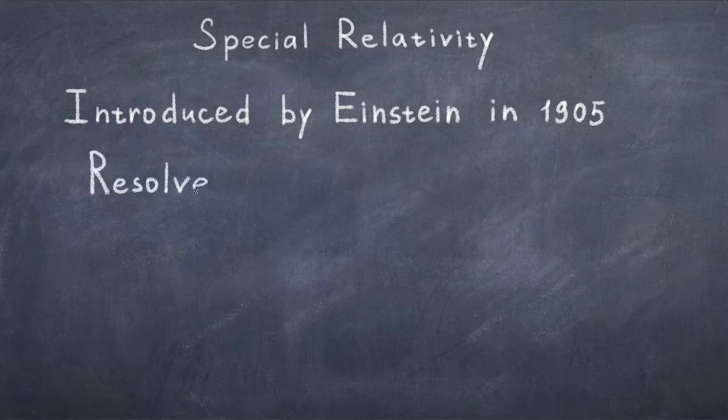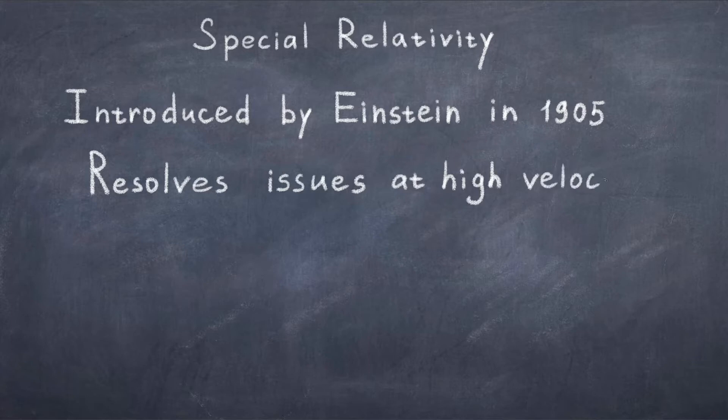This theory marked the end of the classical era and solved the inconsistencies between Maxwell's equations and Newtonian mechanics. As we know today, the speed of light is built into electromagnetism and Newtonian mechanics does not apply to these speeds, hence the discrepancy.